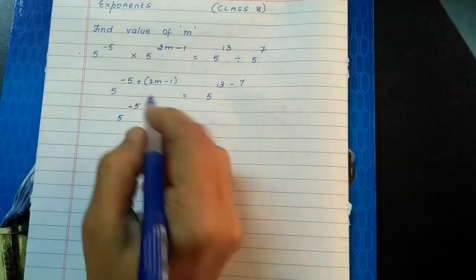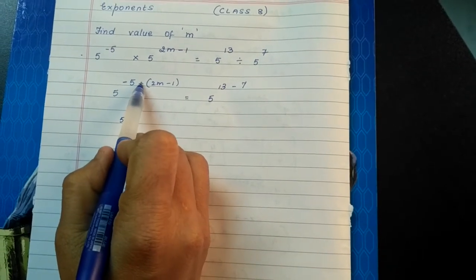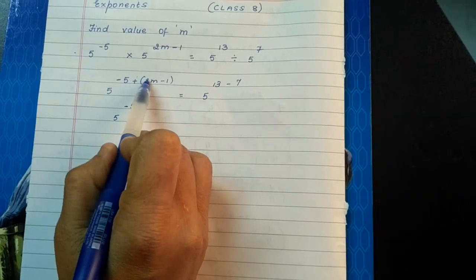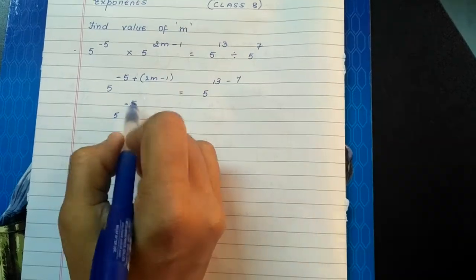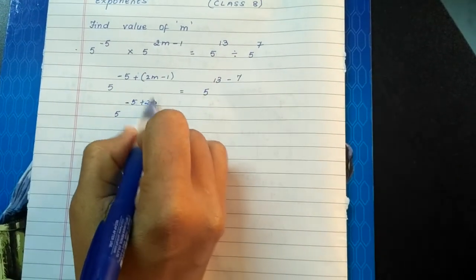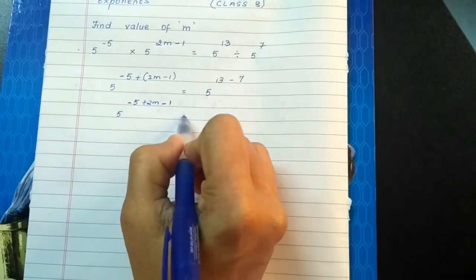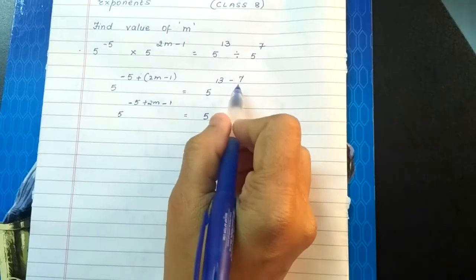φ^(-5 + 2m - 1). If there's a plus sign outside the bracket, nothing changes inside. Plus 2m becomes plus 2m, and plus times minus gives minus 1. So φ^(13-7).